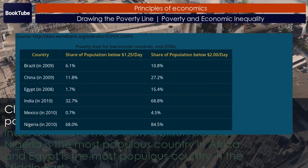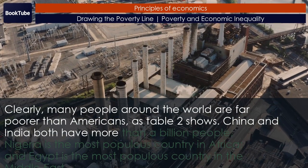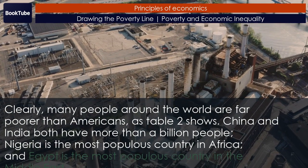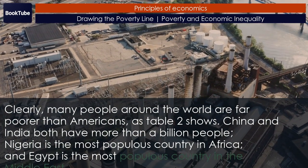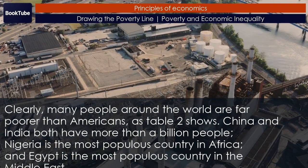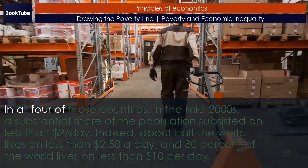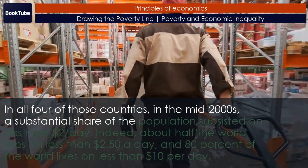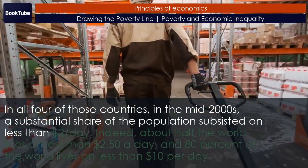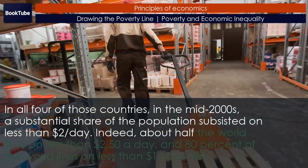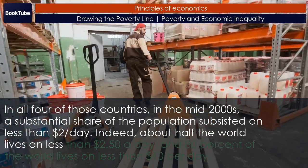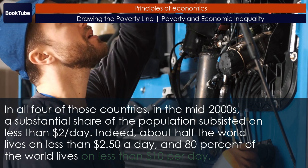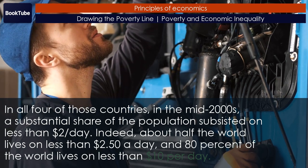As Table 2 shows, China and India both have more than a billion people. Nigeria is the most populous country in Africa, and Egypt is the most populous country in the Middle East. In all four of those countries, in the mid-2000s, a substantial share of the population subsisted on less than $2 per day. Indeed, about half the world lives on less than $2.50 a day, and 80% of the world lives on less than $10 per day.